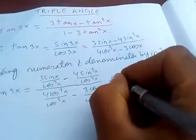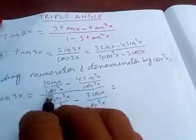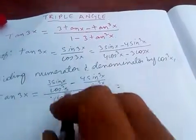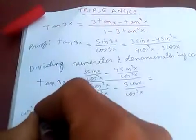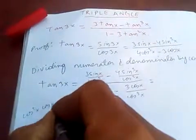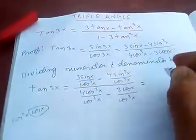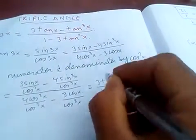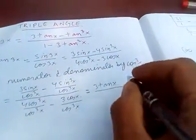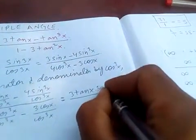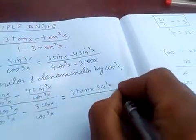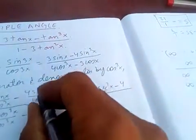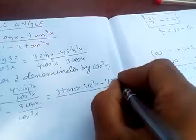So here, cos³x can be written as cos²x into cos x. The cos x and sin x terms give us 3 tan x. For the other term, we get 4 sin x over cos³x.